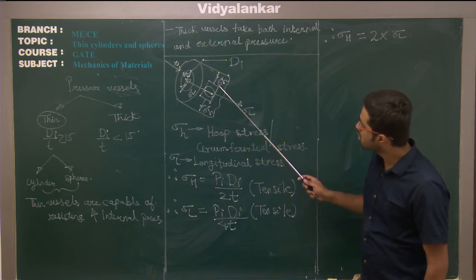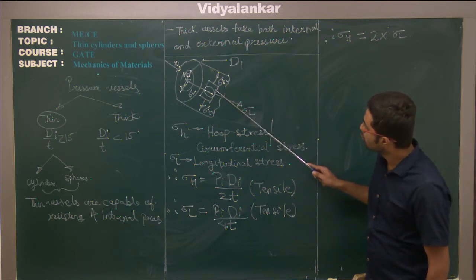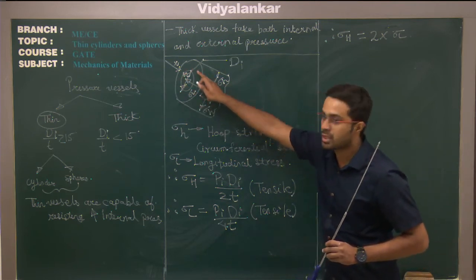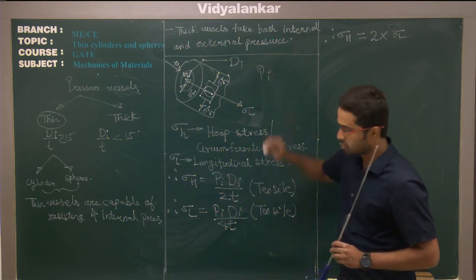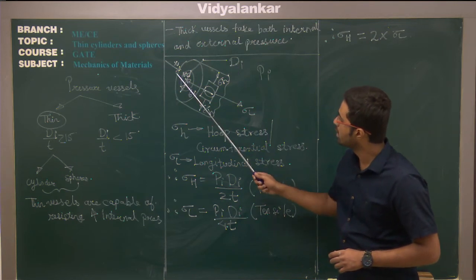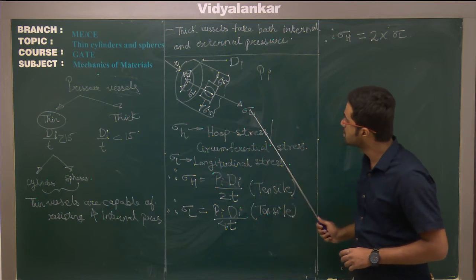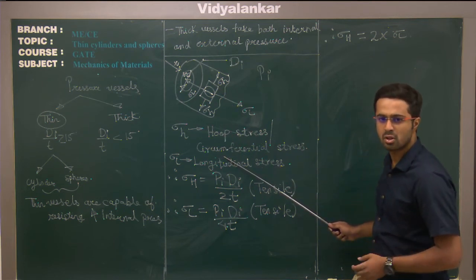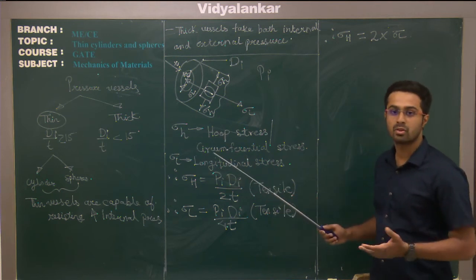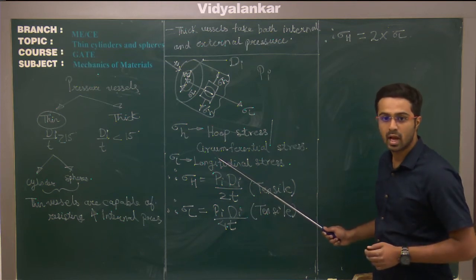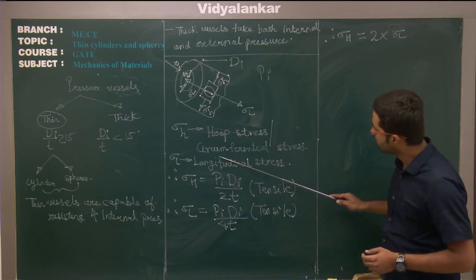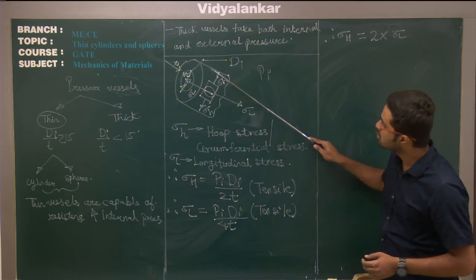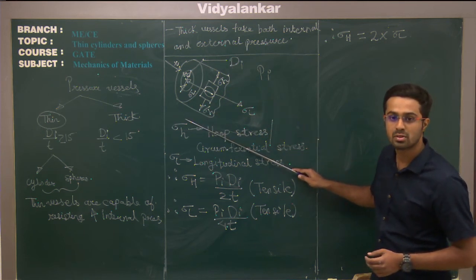On that planar element, I have shown stresses sigma h and sigma l. These are the normal stresses arising because of the internal pressure pi. This cylinder is internally subjected to some pressure pi, with internal diameter di and thickness t. This sigma h is known as hoop stress, or circumferential stress, or sometimes diametrical stress. Sigma h acts along the circumference of the cylinder.